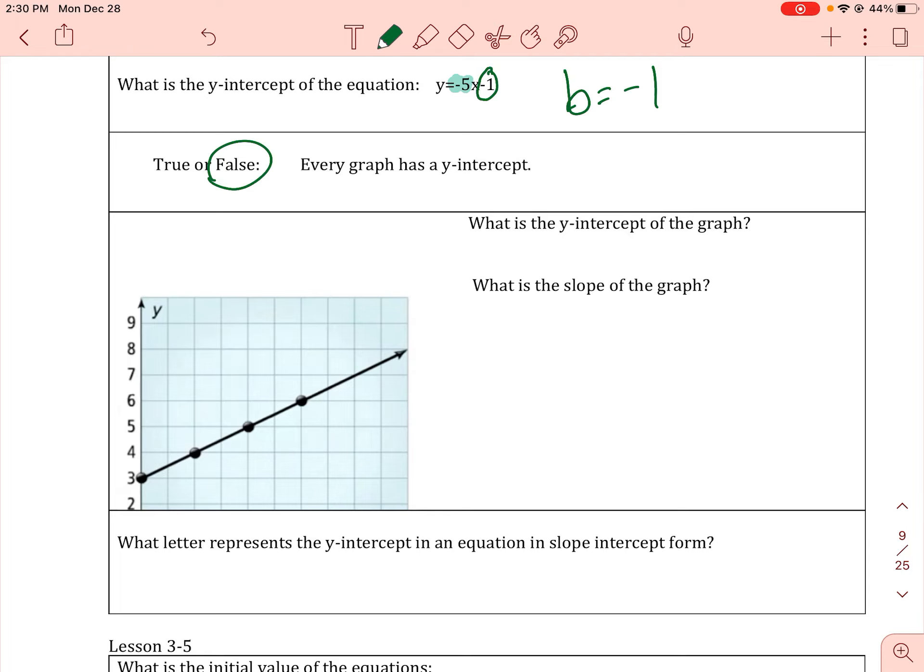What is the y-intercept of the graph? So again, we want to find b, and that is the point where the graph crosses the y-axis. b equals 3.